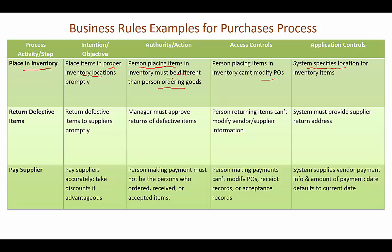For returning defective items, we want to make sure items are returned properly to obtain any credits and avoid paying for items we shouldn't. Manager approval and verification that items are indeed defective is recommended. As a fraud control, the person returning items must not be able to modify vendor and supplier information — otherwise someone could change the vendor address to ship goods to themselves. The application control has the system provide the supplier address automatically, so it cannot be keyed in from scratch.